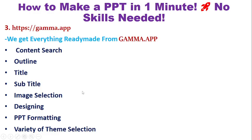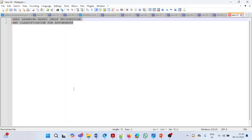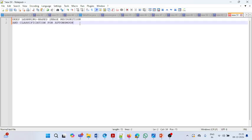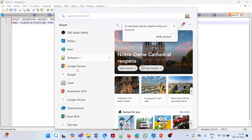After getting the output from Gamma.app, you can customize your PowerPoint presentation if you want to make some modifications. Let me show you how you can prepare a presentation within one or two minutes using Gamma.app. I will use the same title: 'Deep Learning Based Image Recognition and Classification for Autonomous Vehicles.' First, you have to go to the website Gamma.app.